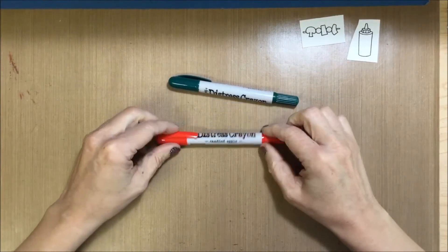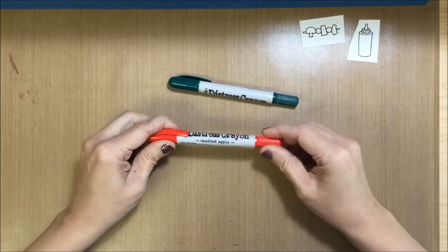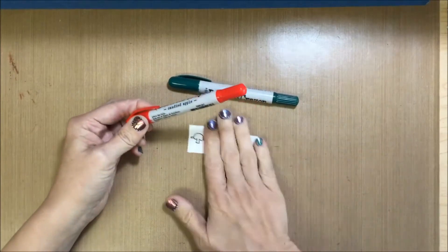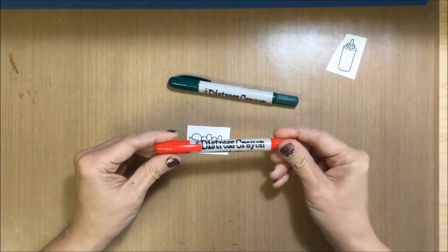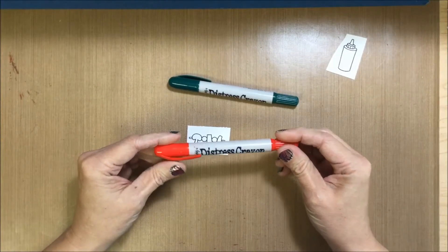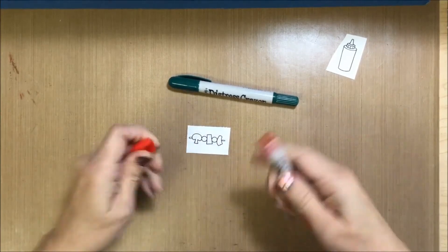Today I thought I would do a demo on using the Tim Holtz Distress Crayons in my watercoloring. We're going to start with this one. Distress Crayons are a water reactive pigment in a stick form.